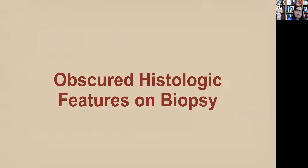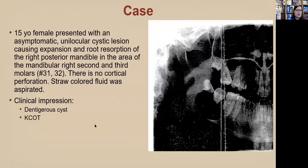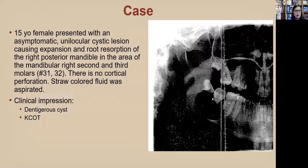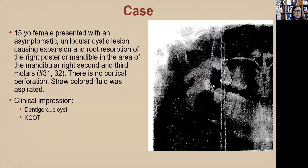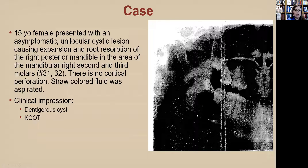Switching gears to obscured histologic features on biopsy: a 15-year-old presents with an asymptomatic unilocular cystic lesion causing expansion and root resorption of both the first and second molars. There is no cortical perforation and the surgeon aspirated straw-colored fluid. The surgeon's differential is a dentigerous cyst from the third molar or a KCOT. KCOTs tend to have anterior-posterior growth, whereas ameloblastomas are more likely to have buccolingual growth.